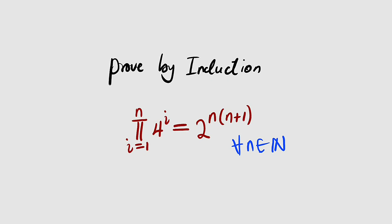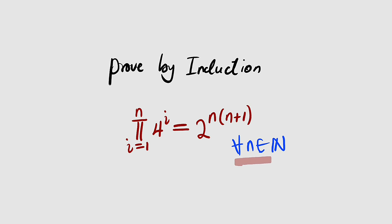Hello, good dear viewers. In this tutorial, we want to prove this mathematical statement using mathematical induction. It states that the product of 4 to the power of i, i from 1 to n, is exactly equal to 2 raised to the power of n multiplied by n plus 1, for all n in the set of natural numbers.